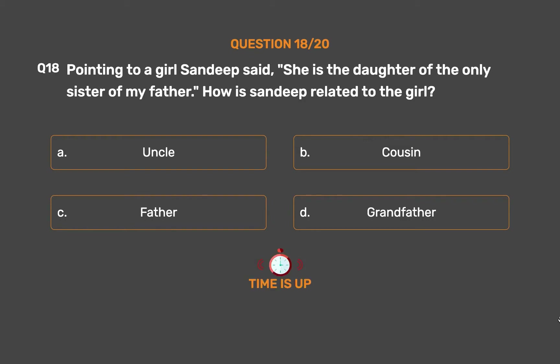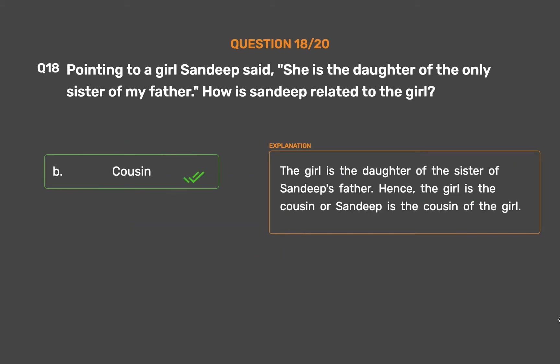The correct answer is Option B: Cousin. The girl is the daughter of the sister of Sandeep's father. Hence, the girl is the cousin of Sandeep, or Sandeep is the cousin of the girl.